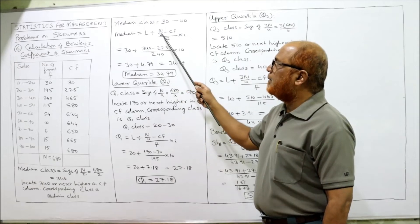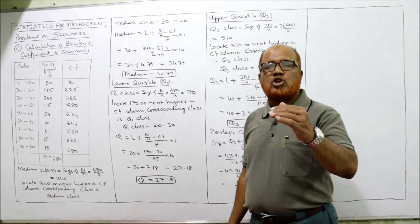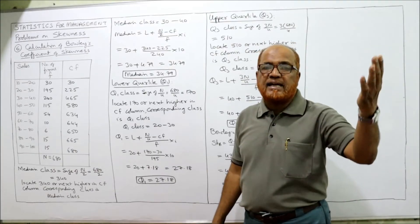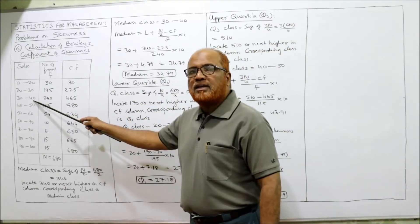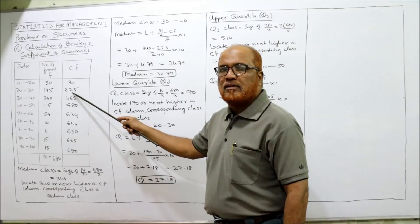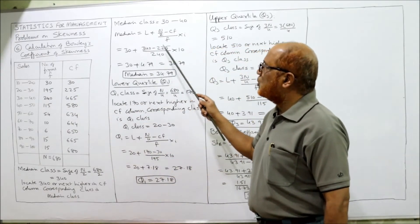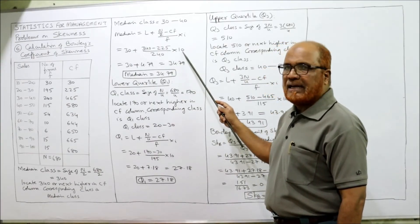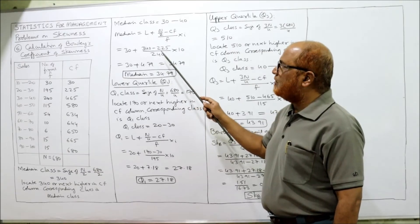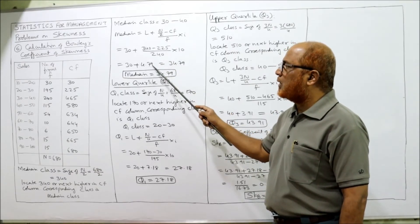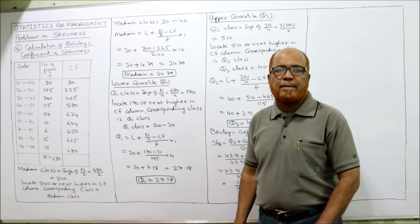Substituting: L = 30, n/2 = 340, cf (preceding class) = 225, f = 240, i = 10. Median = 30 + [(340 − 225) / 240] × 10 = 30 + 4.79 = 34.79. The median is 34.79.